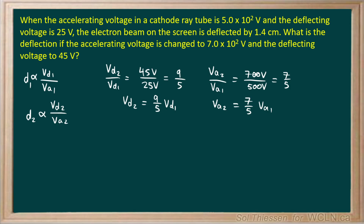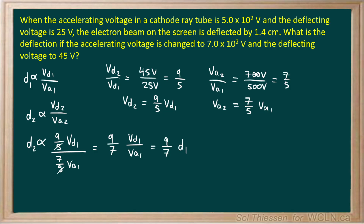Writing a proportionality statement for the second deflection: D2 is proportional to VD2 over VA2. Since VD2 is 9/5 of VD1 and VA2 is 7/5 of VA1, the fives cancel, leaving 9/7 times VD1 over VA1. Recognizing VD1/VA1 as the proportionality for the first deflection, the second deflection is 9/7 times the first deflection.